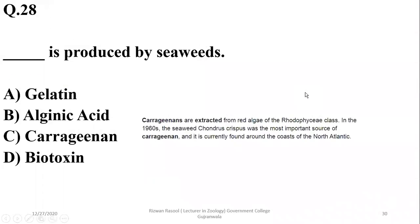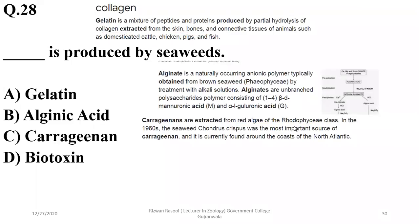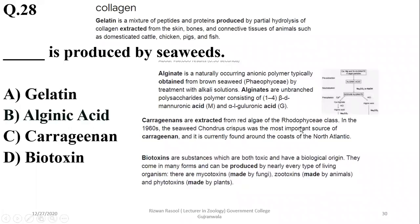Question 27: Which substance is produced by seaweeds? Gelatin is a mixture of peptides and proteins produced by partial hydrolysis of collagen from skin, bones, or connective tissue — so it is not the answer. Alginate and alginic acid are seaweed-derived. Carrageenan comes from red algae (Rhodophyceae). So the answer is alginic acid and alginate.